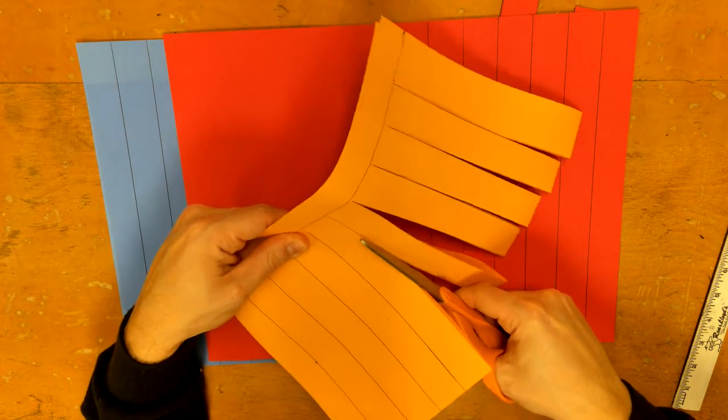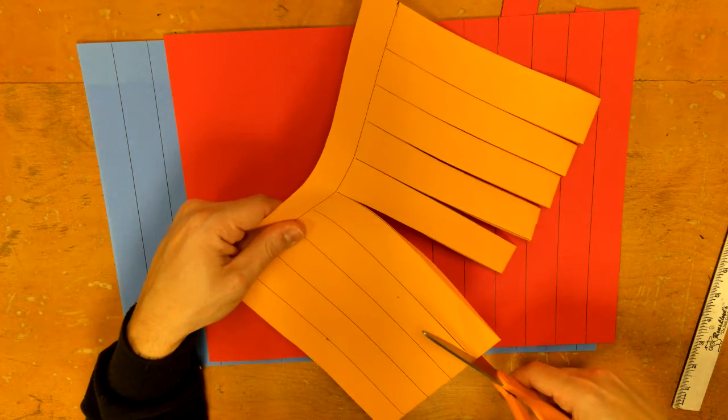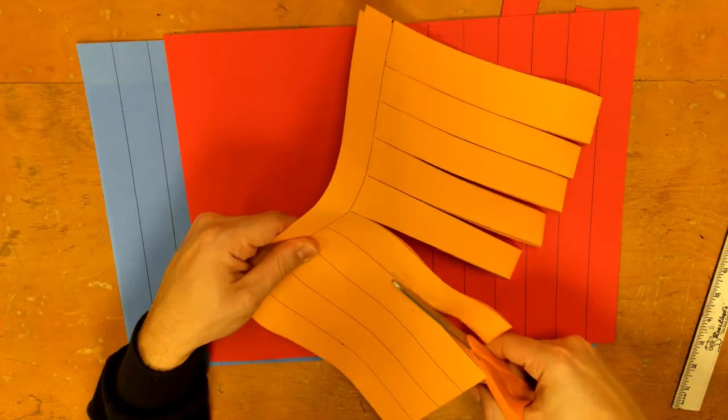While you're cutting this, you could have an adult draw your lines so that when you're done with this, you can go and cut your other two sheets like I showed you earlier.